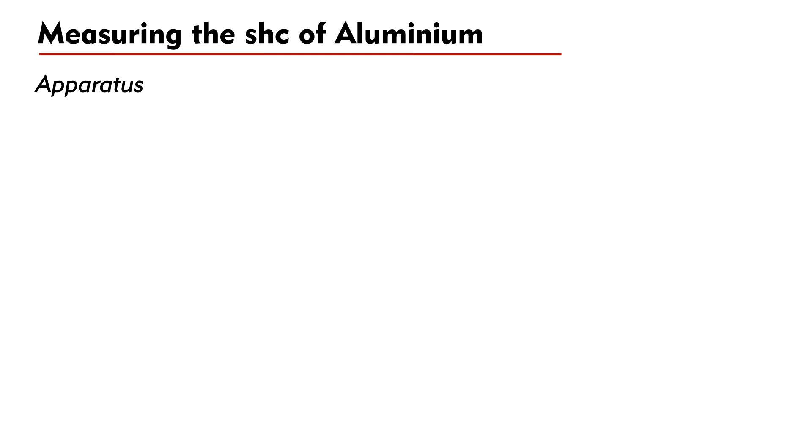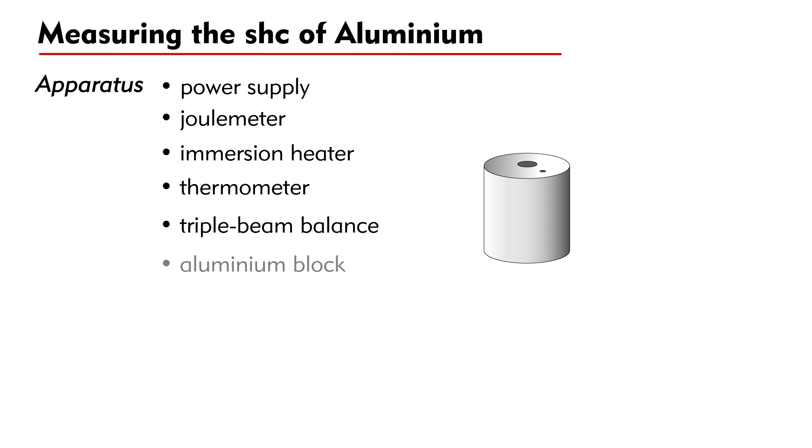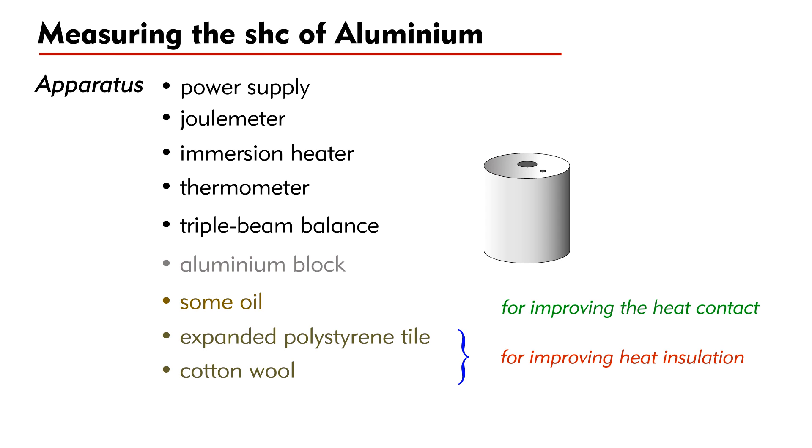The apparatus used are similar: a power supply, a joulemeter, an immersion heater, a thermometer, a triple beam balance, and of course an aluminum block. In order to improve the experiment, we shall also use some oil for improving the heat contact, and an expanded polystyrene tile and some cotton wool for improving heat insulation.